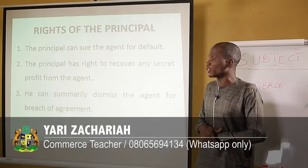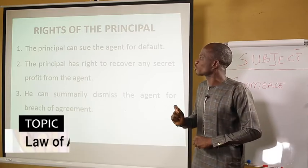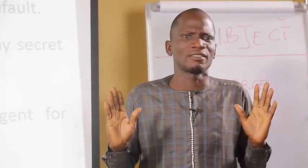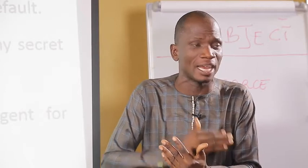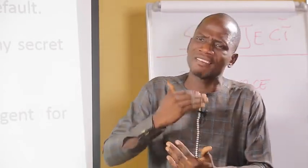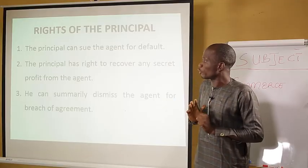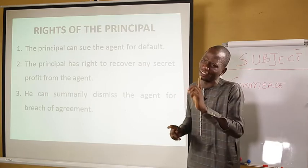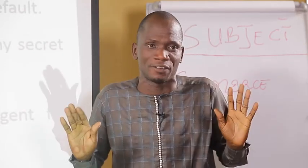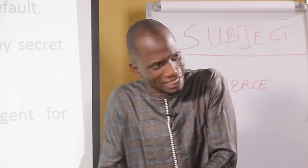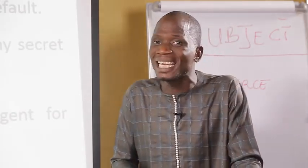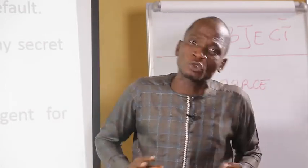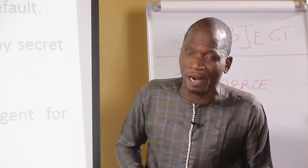The last item is rights of the principal. One, the principal can sue the agent for default. If there is any breach in the contract, the principal has a right to sue the agent. Two, the principal has the right to recover any secret profit from the agent. As an agent, you are not supposed to make any secret profit. If the principal happens to realize that you are making gain without his consent, the principal can recover it. The business belongs to the principal, not the agent.